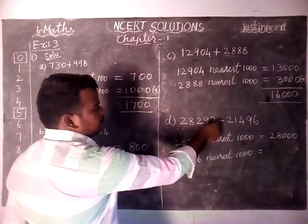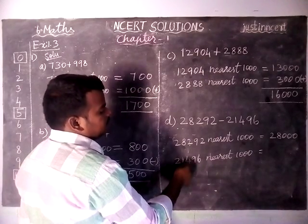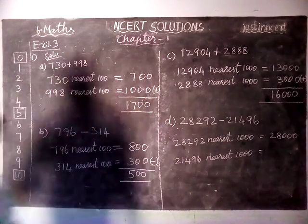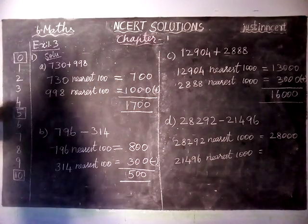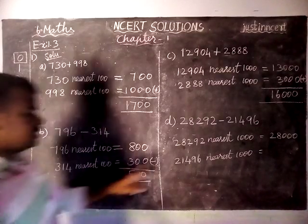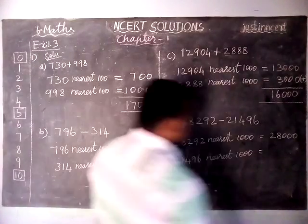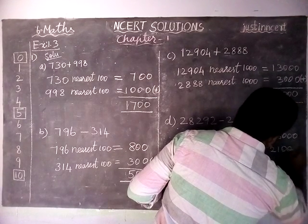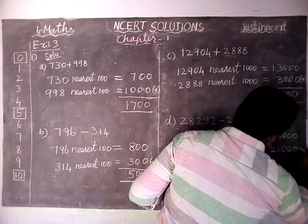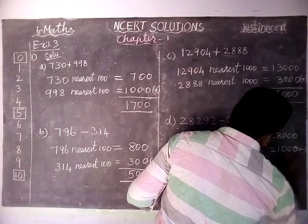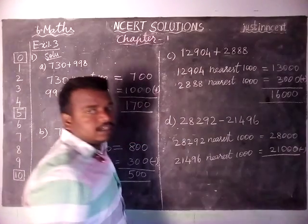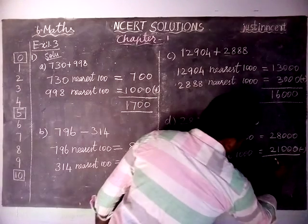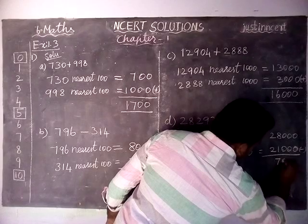Next, 21496. The 100th place is 4. When 4 is coming, we have to choose the previous 1000. Previous 1000 is 21000. We are subtracting this. So 28000 minus 21000 is equal to 7000.